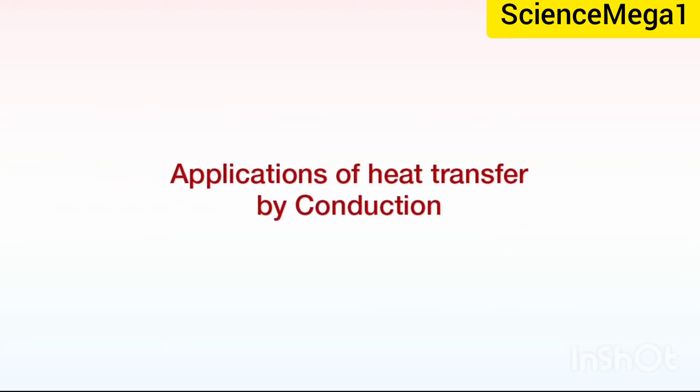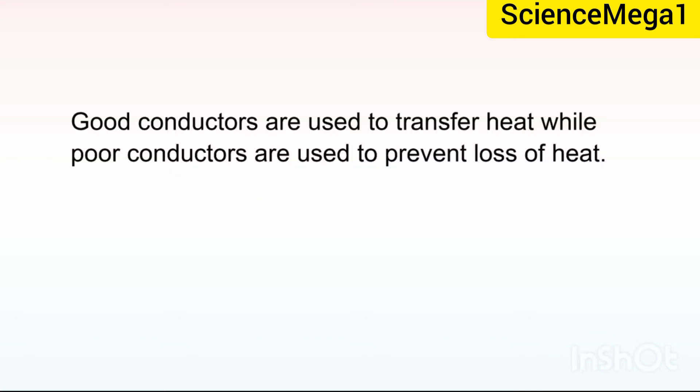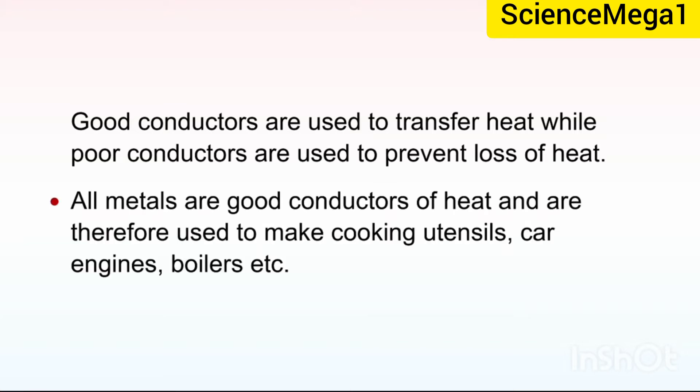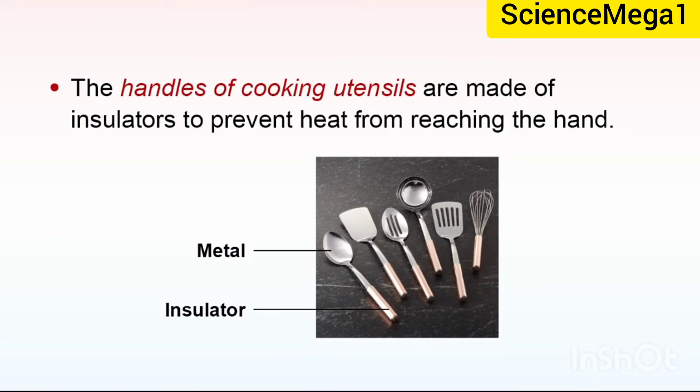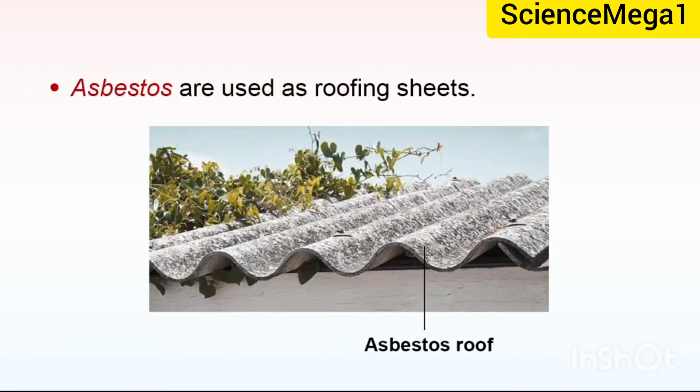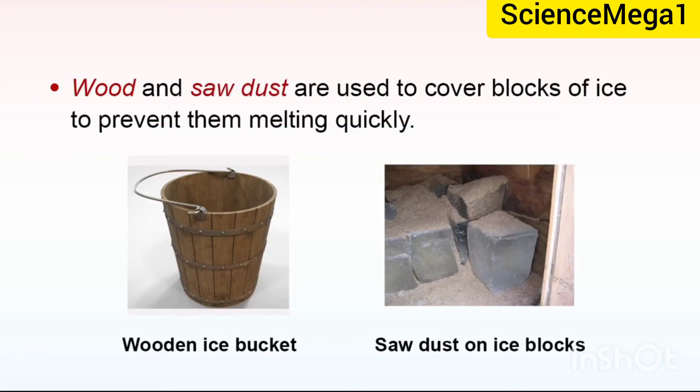We now look at application of heat transfer by conduction. Good conductors are used to transfer heat, whilst poor conductors are used to prevent loss of heat. All metals are good conductors of heat and are therefore used to make cooking utensils, car engines, boilers, etc. Heat insulation is the next item we are considering. Poor conductors or insulators are used in reducing heat transfer or heat loss. For example, the handles of cooking utensils are made of insulators to prevent heat from reaching the hand. Asbestos are used as roofing sheets. Wood and sawdust are used to cover blocks of ice to prevent them melting quickly.